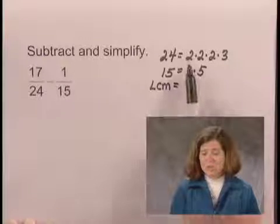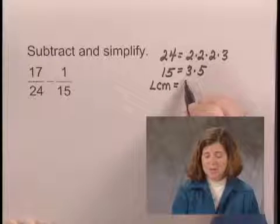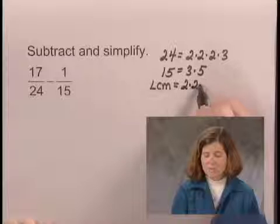So we'll start with 2. We have three factors of 2 in 24, so the least common multiple must contain three factors of 2.